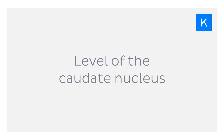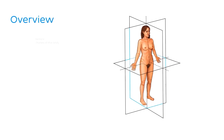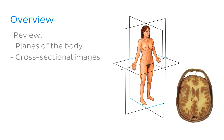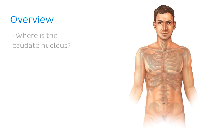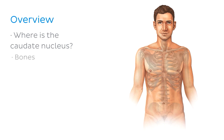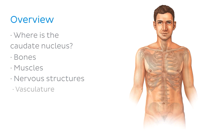The level we'll be looking at is the level of the chordate nucleus. We'll begin this tutorial by reviewing the planes of the body and identify which one we use for cross-sectional images. We'll also briefly cover what a cross-sectional image is and how to orientate ourselves when looking at them. Next, we'll look at where the chordate nucleus is so we can anticipate what structures to expect. Finally, we'll identify these structures — the bones, muscles, nervous structures, and vessels at this level — and then discuss what you might see clinically.